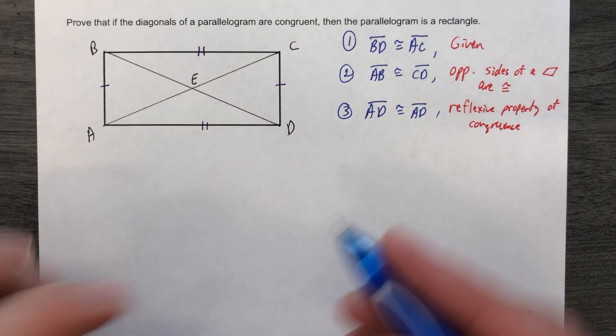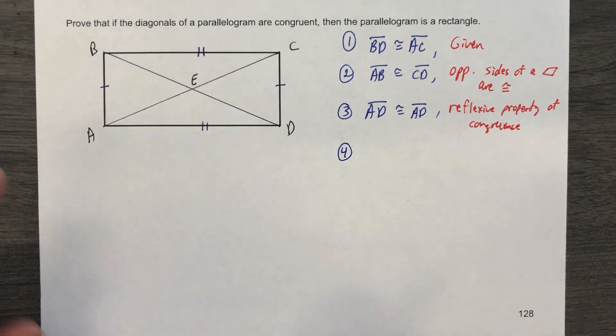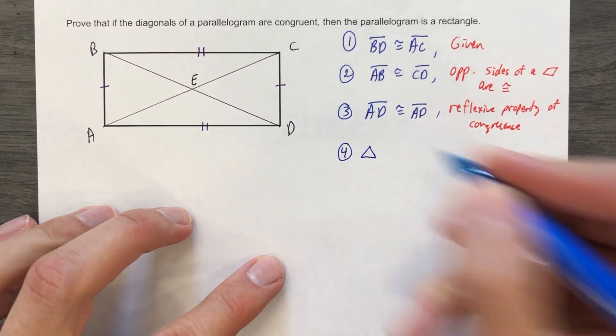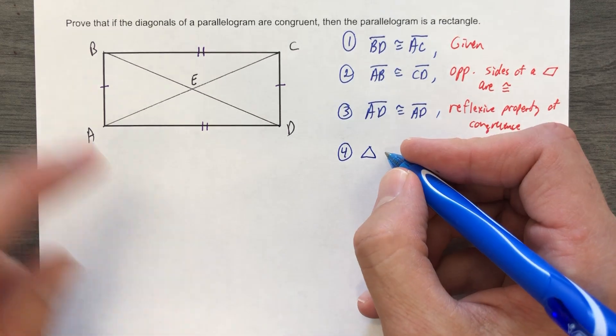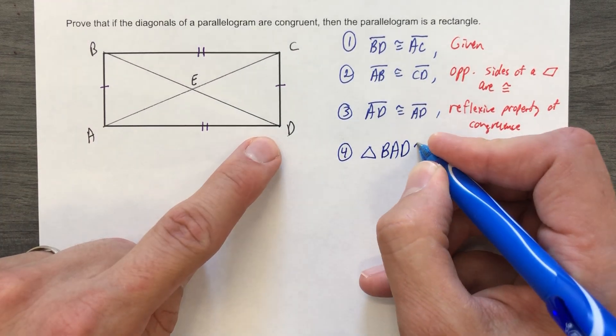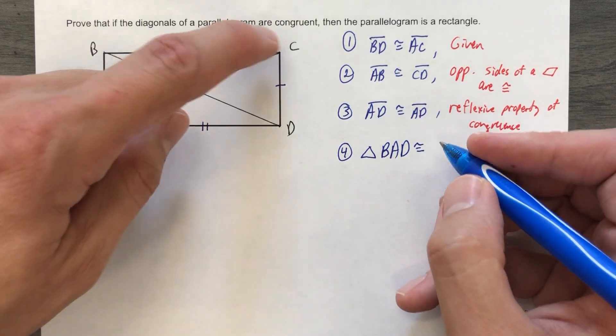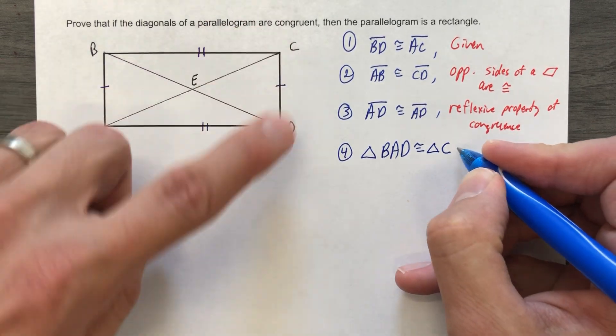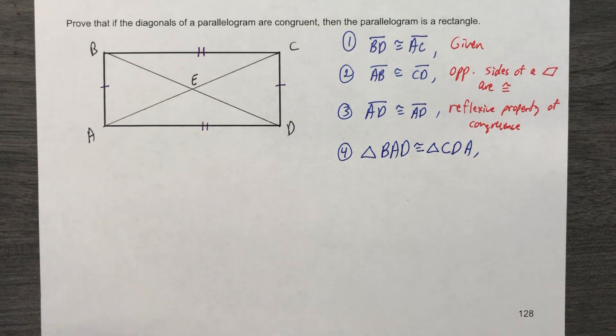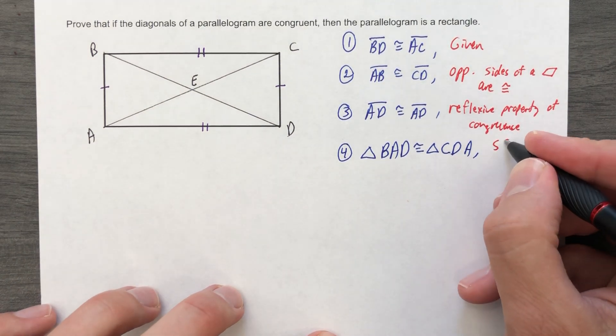Number four. What's step number four? Well, we just said sides are equal, sides are equal, the side is equal to itself. So we have two triangles that must be equal to each other. Triangle BAD is congruent to triangle CDA. And we know that because of side, side, side.